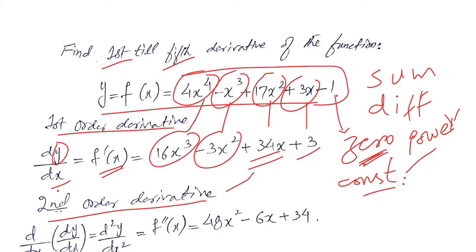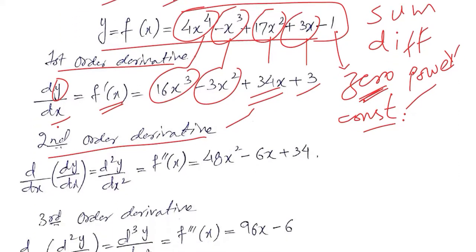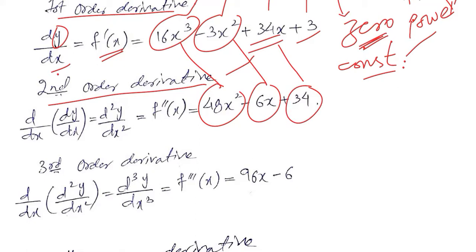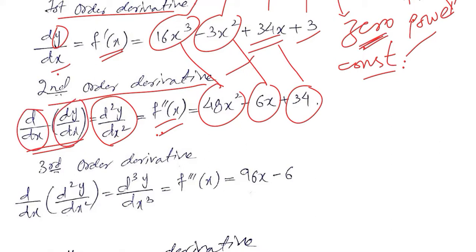The second order derivative is no different in procedure — we apply the same rules again. This term reduces, 3x² with a minus sign reduces, and 34x becomes 34. We obtain the second order derivative, which represents the derivative of the derivative of y. The third order derivative is the further derivative of the second order derivative; this term reduces, and 6x becomes 6.